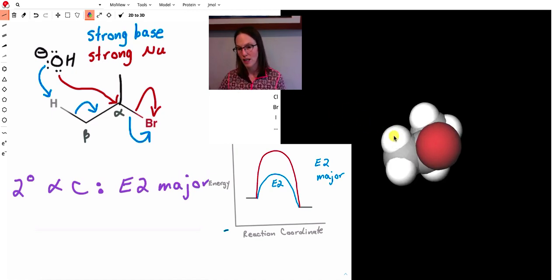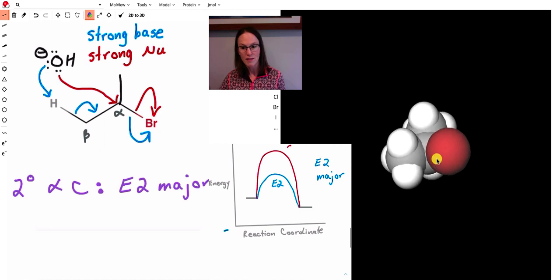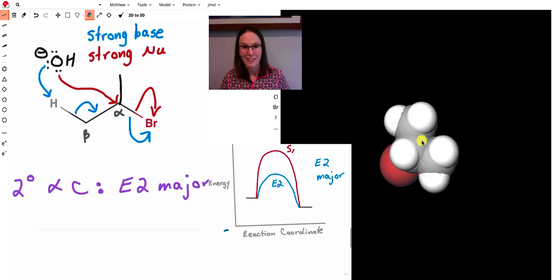Much easier for a base to collide with this proton that's sticking out in space, rather than having to access, there's a lot of repulsion there as a nucleophile approaches that alpha carbon.